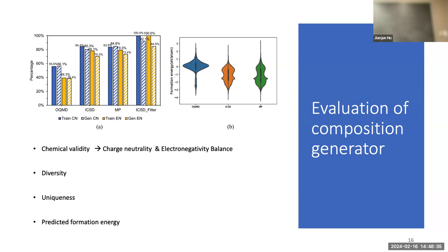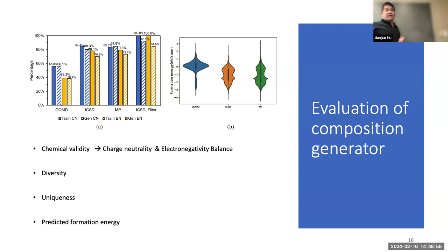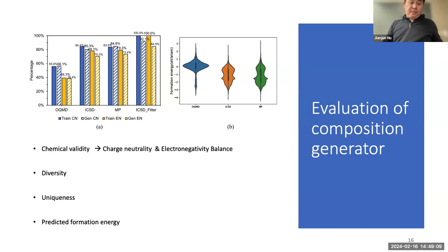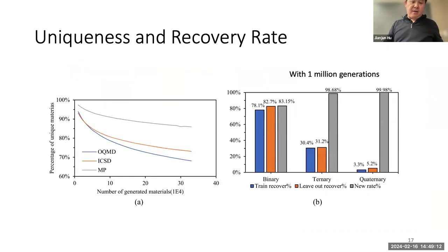The power of deep learning is that it can extract those complex constraints or rules automatically from training samples - without explicit programming, even if you don't know much chemistry. The model discovered the rule of charge neutrality and oxidation-state compatibility. The second result shows the formation energy of materials. Most of the generated sample formation energies are around or below zero, and in materials science, if the formation energy is below zero, the material is more likely to be synthesizable and stable.